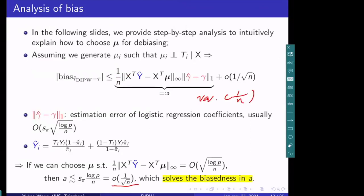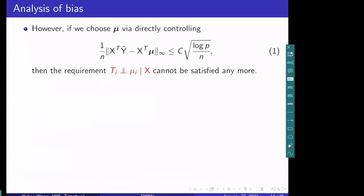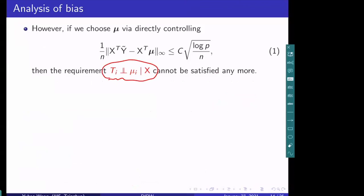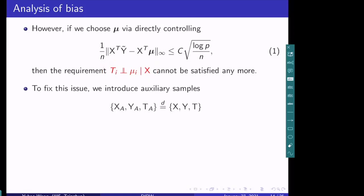Our problem now becomes: choose mu such that the L∞ norm of (X^T Ỹ - X^T mu) is of order √(log P / N). However, if we choose mu based on the observed data in a way that depends on T_i and Y_i through Ỹ, then the requirement that T_i and mu are independent cannot be satisfied anymore. To fix this issue, we introduce auxiliary samples from the same distribution as the main samples, and then we choose mu to satisfy a modified constraint.